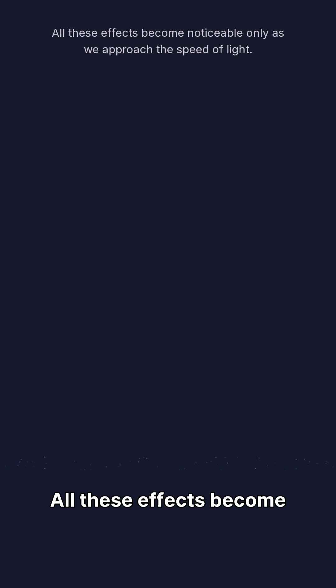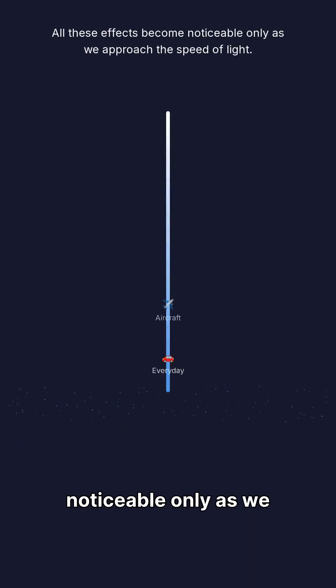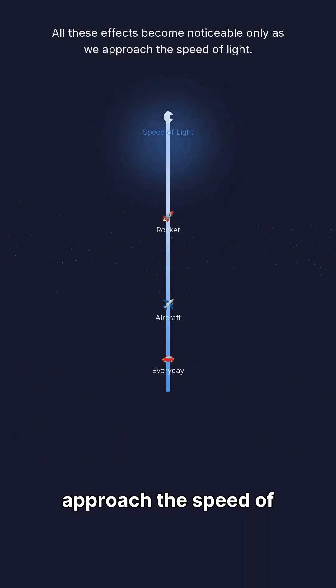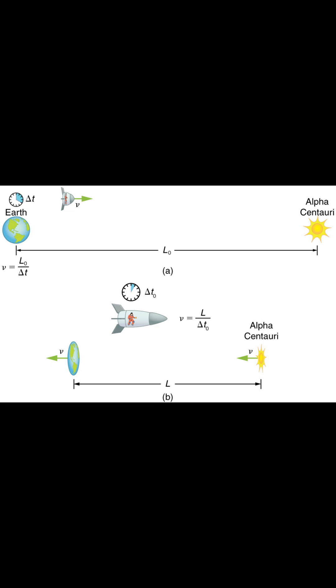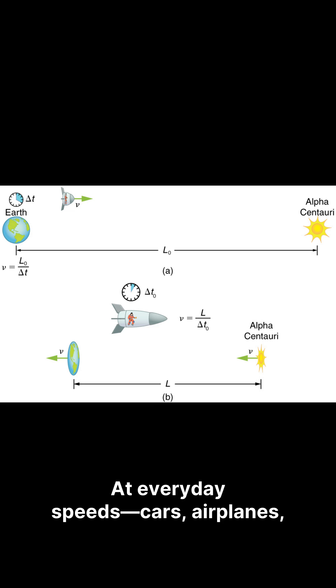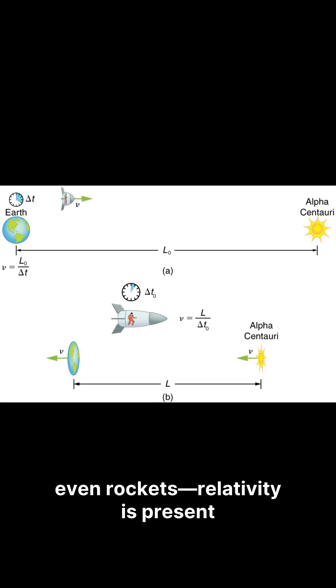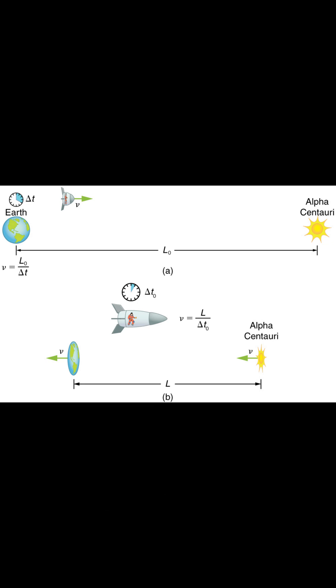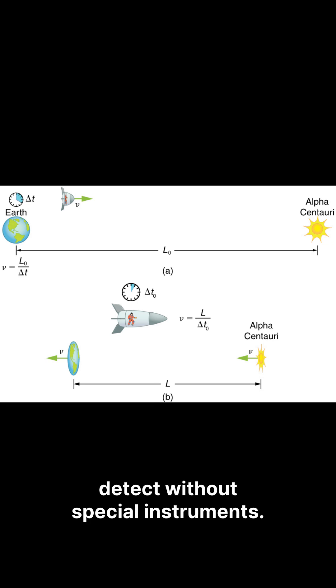All these effects become noticeable only as we approach the speed of light. At everyday speeds — planets, cars, airplanes, even rockets — relativity is present but too tiny to detect without special instruments.